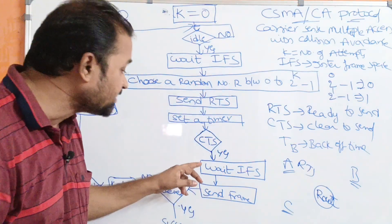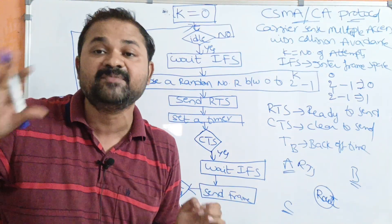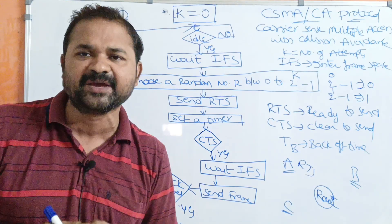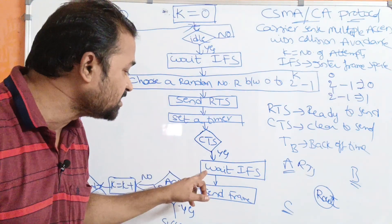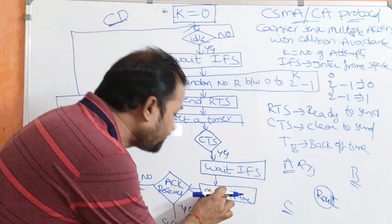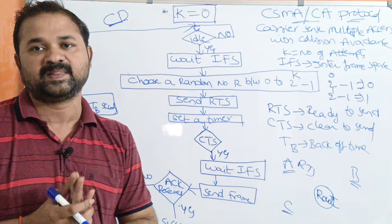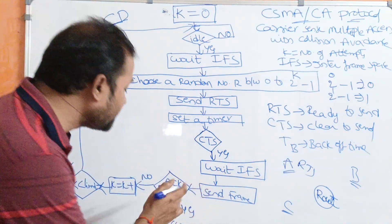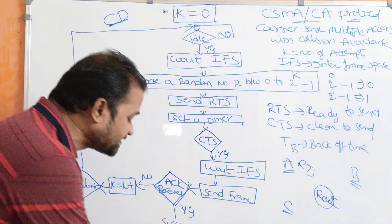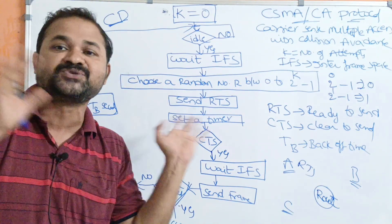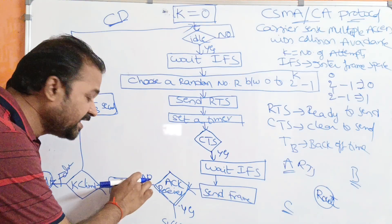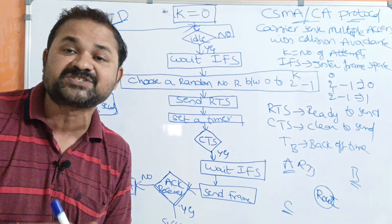Once the station receives the CTS signal from the router, CTS means the router is ready and the station can send the frame. However, the station does not send immediately, because another station may be in the process of transmitting. To avoid collision, the station waits for IFS — a random period of time — and then sends the frame. If an acknowledgement is received, it is a successful transmission.